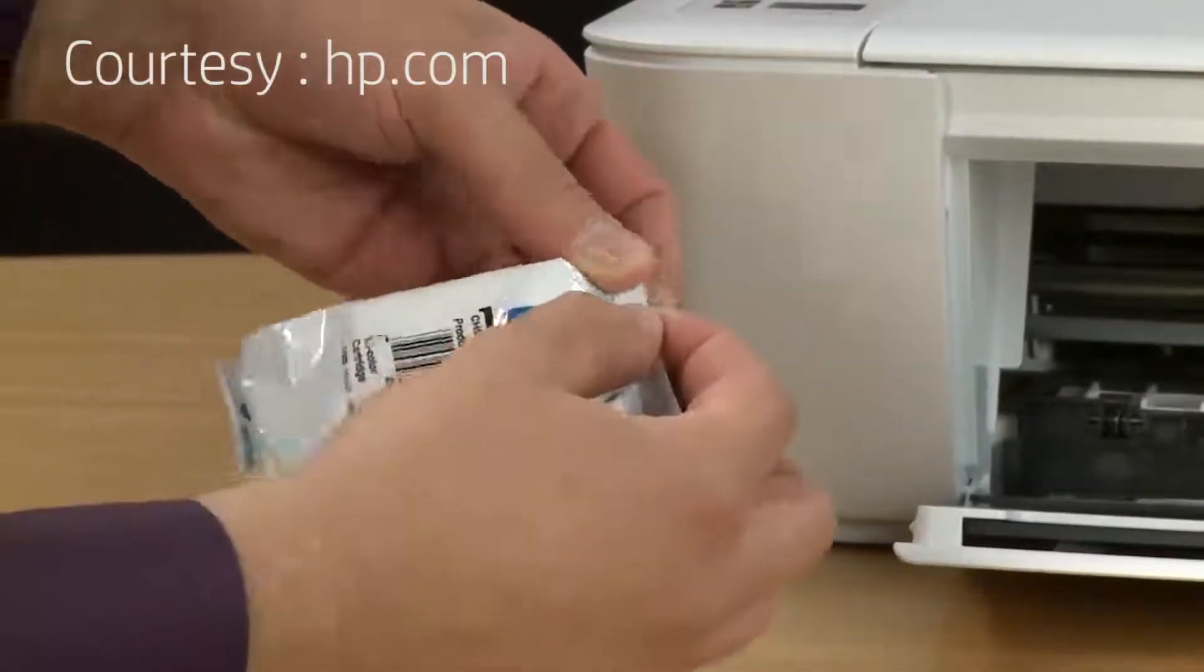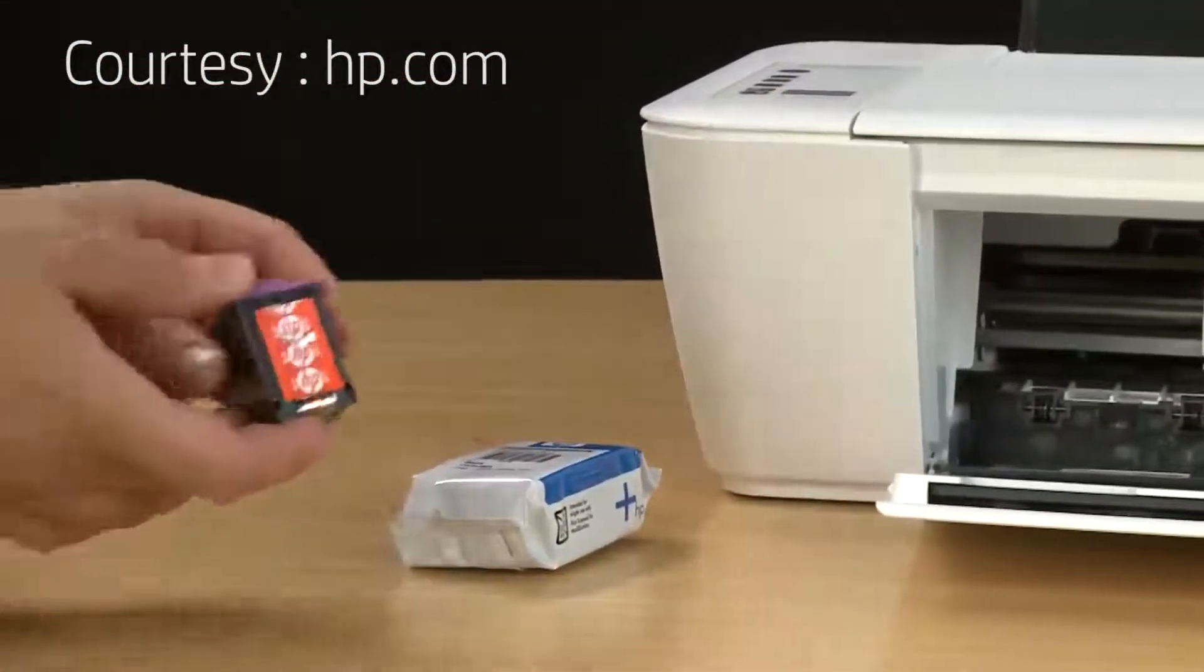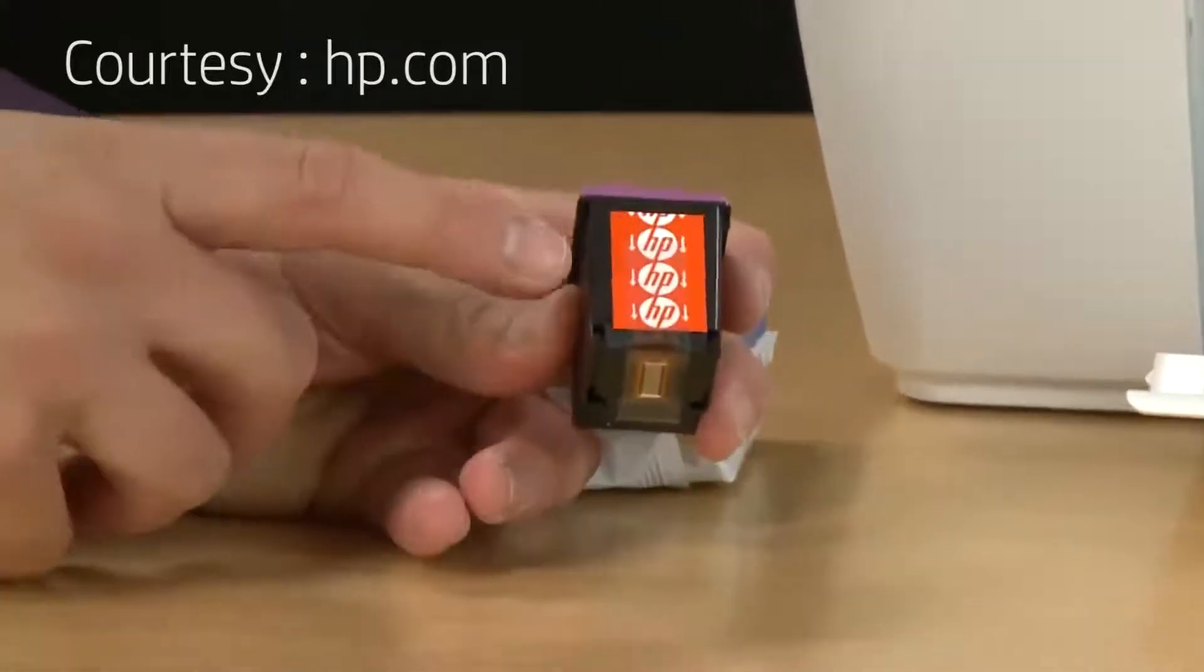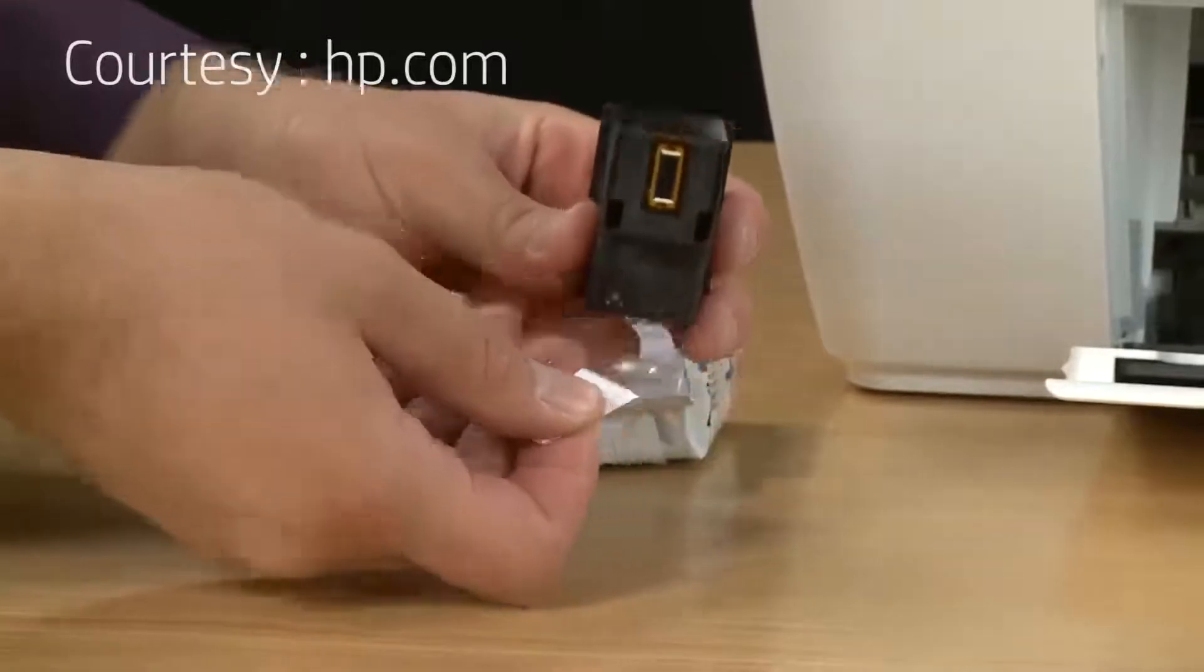There's a serrated top which will help you open up the packaging. If you still can't, you can use some scissors. Remove the cartridge from the packaging. Use the orange pull tab to remove the tape covering the electrical contacts and ink nozzles.